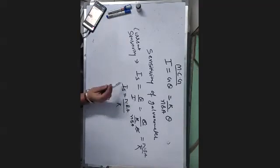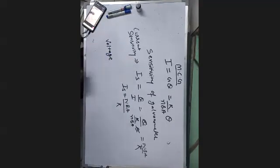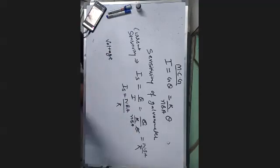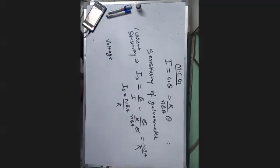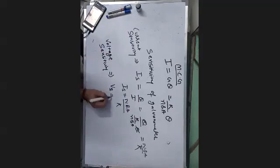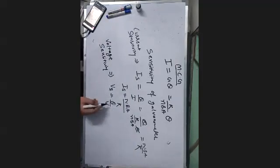This is the voltage sensitivity. The galvanometer is a device used to detect current and potential difference — it is a detector, not a measure; for measurement you use a voltmeter. The voltage sensitivity formula is Vs equal to theta by V.